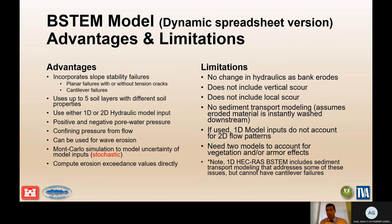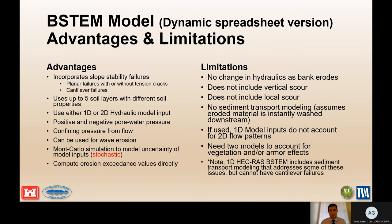Limitations of B-STEM — which also apply to the previous models — include no change in hydraulics as the bank erodes, so widening of the bank and resulting reduction in velocity and shear are not directly accounted for. It does not include vertical scour during a flood event, local scour such as bridge piers, or sediment transport modeling, assuming eroded material is instantly washed downstream. 1D model inputs do not account for 2D flow patterns, and two model runs are needed to account for vegetation-armor and bare-soil conditions. The HEC-RAS B-STEM version does include an integrated sediment transport model addressing some limitations, but cannot simulate cantilever failures.